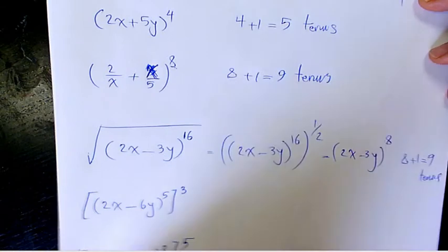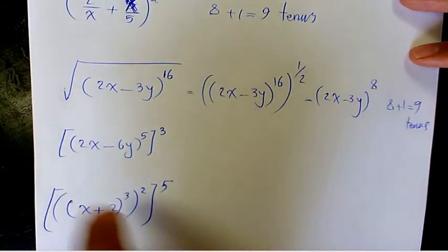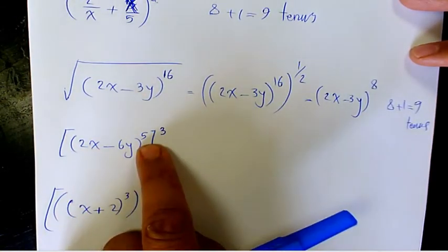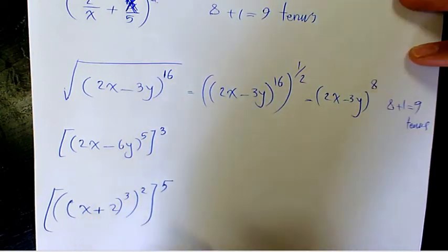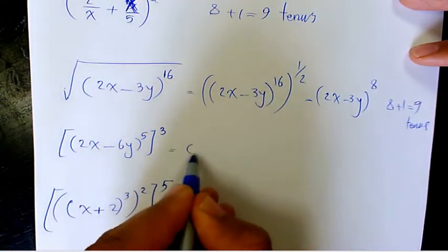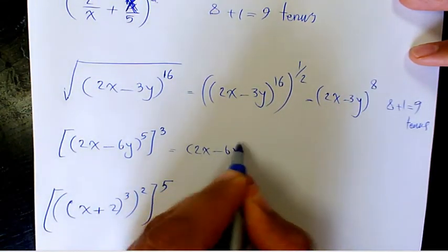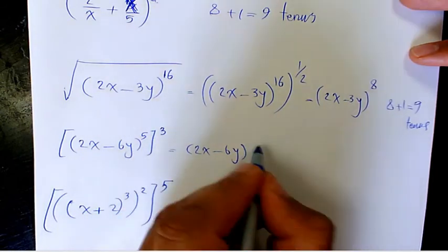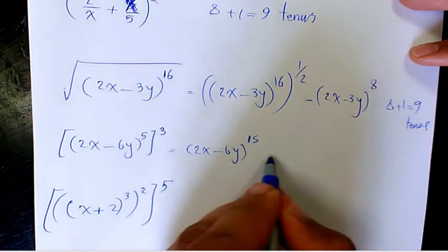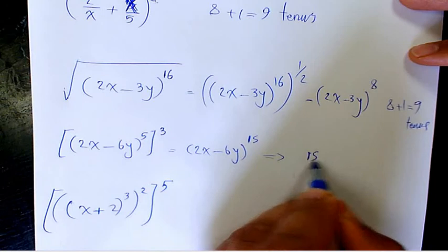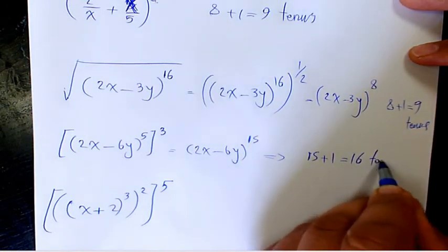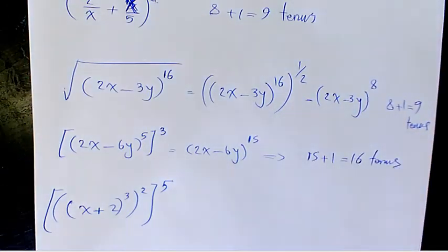Next one: (2x-6y)^5 to the power of 3. That's going to be (2x-6y)^(5×3) which is 15, and then you're going to say we have 15+1, 16 terms in total. So 5 times 3 is 15, 15+1 is going to be 16 terms.